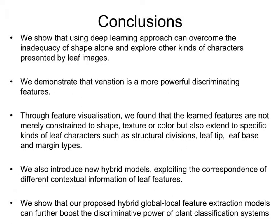In this work, we show that using a deep learning approach can overcome the inadequacy of shape alone and explore other kinds of characters presented by leaf images. We demonstrate that venation is a more powerful discriminating feature. Through feature visualization, we found that the learned features are not merely constrained to shape, texture, or color, but also extend to specific kinds of leaf characters such as structural divisions, leaf apex, leaf base, and margin types. We also introduced new hybrid models exploiting the correspondence of different contextual information of leaf features, showing that hybrid global-local feature extraction models can further boost the discriminative power of plant classification systems.